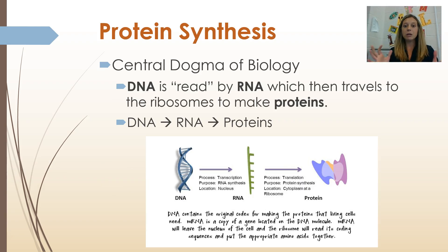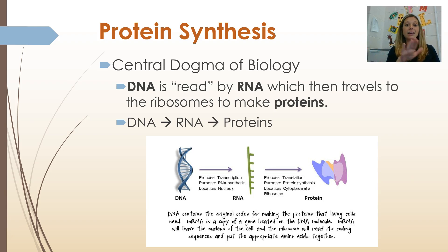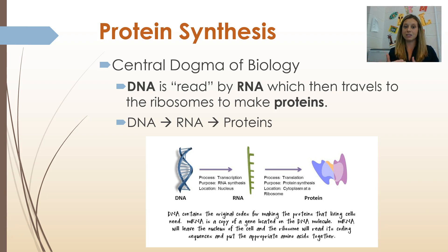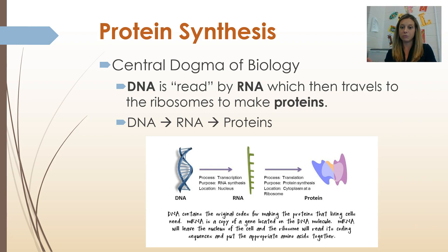We're going to start with the big picture, and the big picture is actually called the central dogma of biology — this really big idea that all of biology is surrounded around. The central dogma says that DNA is read by RNA, which then travels to the ribosome to make proteins. DNA carries the instructions, those instructions are read by RNA, and then they are made into proteins at the ribosome.